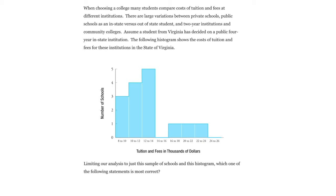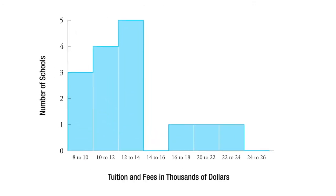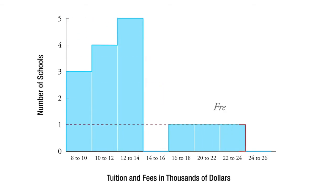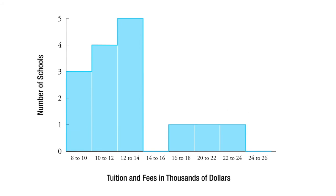The way you have to read a histogram is you have to look at the height of each bar as the frequency — in other words, in this case, the number of schools. And the x-axis is the class category, in this case a range of prices, how much each university costs.